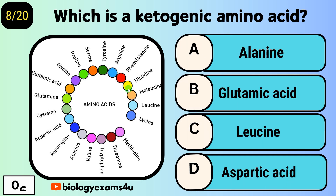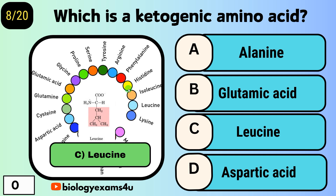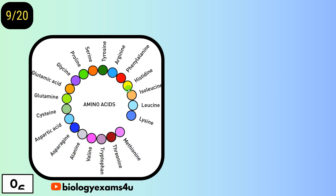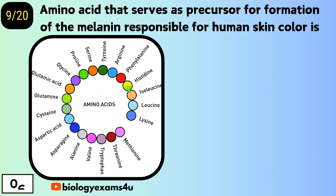Question number eight: which is a ketogenic amino acid? Option A, alanine; option B, glutamic acid; option C, leucine; option D, aspartic acid. The answer is leucine.